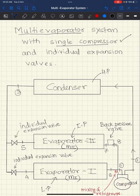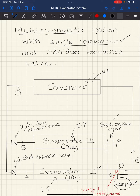The compressor operates between the lowest pressure (evaporator one pressure) and the highest pressure (condenser pressure). We need to think of an idea of lowering the pressure of evaporator two and bringing that refrigerant to the lowest pressure. For that, a back pressure valve is provided, which throttles the refrigerant coming out of evaporator two. Mixing then happens at point M, where refrigerant of mass m1 from evaporator one and mass m2 from evaporator two combine.